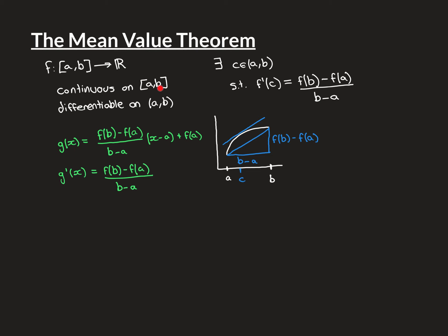The function g is clearly continuous everywhere on the closed interval [a, b] because it is a linear function. It is also differentiable everywhere on the open interval (a, b): any secant line connecting two points on this straight line will have the same gradient as the line itself, so when you take the limit as h approaches zero, the derivative equals f(b) minus f(a) over b minus a. So g'(x) equals that value for all x in (a, b).